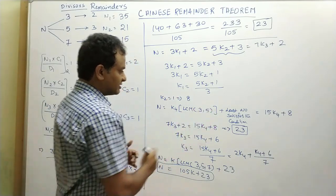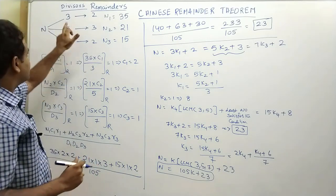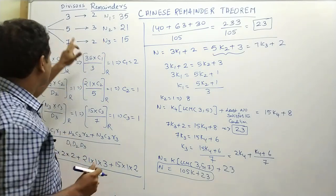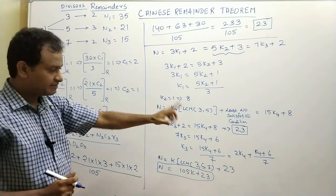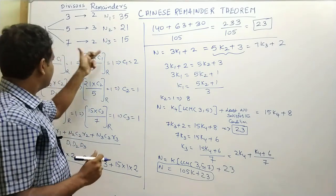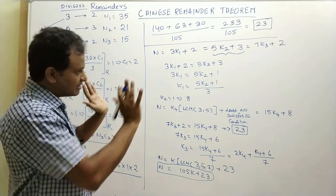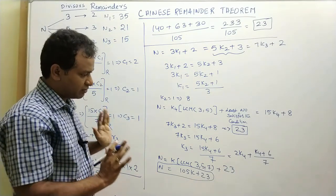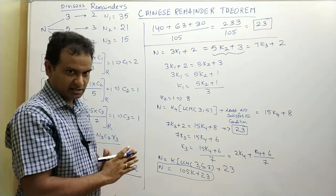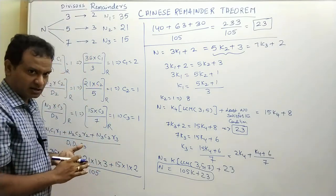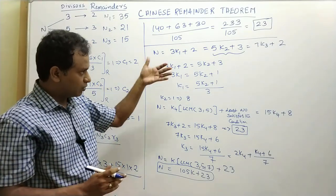Let us check: when you divide 23 by 3, the remainder is 2; when you divide 23 by 5, the remainder is 3; when you divide 23 by 7, the remainder is 2. This is the general and most efficient method. Instead of following the Gauss algorithm, I suggest you follow this shortcut method.